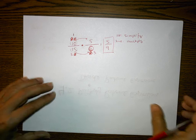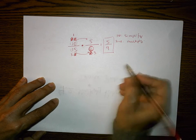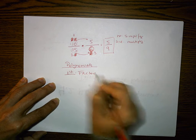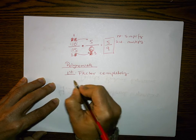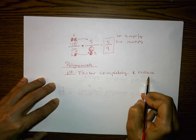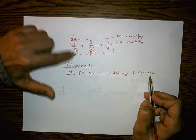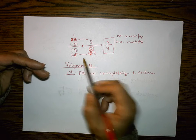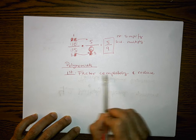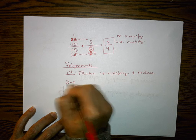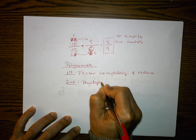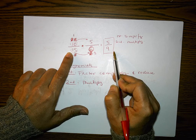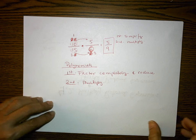That same idea applies to polynomials. For polynomials, the steps are: first, factor completely; second, reduce the common factors; and then multiply straight across — numerator times numerator, denominator times denominator — to create the new fraction. Those are the steps every time.